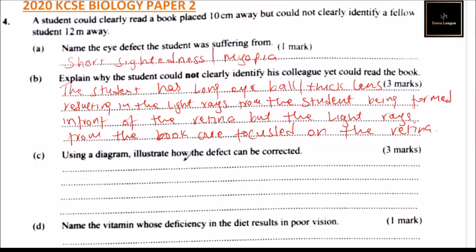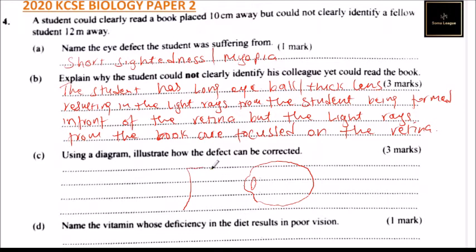Part C: using a diagram, illustrate how the eye defect can be corrected. So we can correct that by wearing specs or glasses. We draw the eye like that. The student has a wrong eyeball, so this is the lens — the eye lens — and it will be corrected with a concave lens, where now we have the light coming in and the lens will help to focus the image.